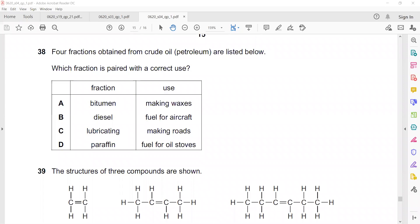What's bitumen? Bitumen is a high-use fraction which is obtained by fractional distillation of crude oil. So the correct answer is D. Bitumen is used for making roads. Diesel is used as fuel for trucks, buses, heavy engines. Lubricating oil can be used for making waxes or to reduce friction. Paraffin or kerosene can be used as fuel for oil stoves.